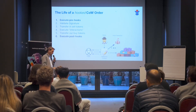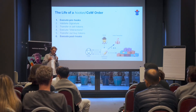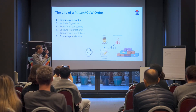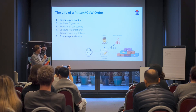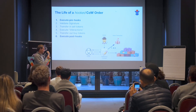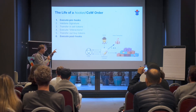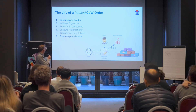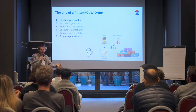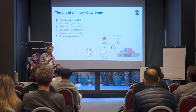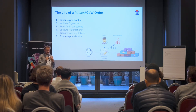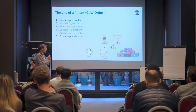If we look at a hooked CoW order, it's pretty much exactly the same — we are still making a swap — but we now allow the user to specify arbitrary interactions before and after the settlement is executed. The very first thing we do is call a bunch of user-specified pre-hooks. The idea is that a pre-hook can enable the swap: it could pull in funds from some DeFi protocol where you have assets staked, or it could set an allowance needed to make the swap happen. Basically anything that needs to happen before your swap can go through, you can specify in a pre-hook.